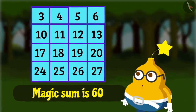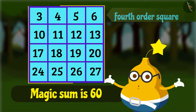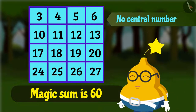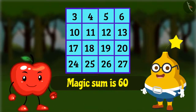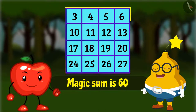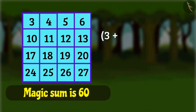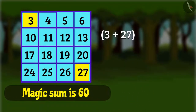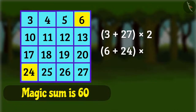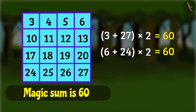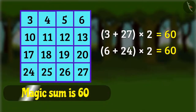Fruity asks: this square is of the fourth order, so there is no central number — how did you calculate the magic sum so quickly? Api says: in a fourth order square one can find the magic sum by finding the sum of numbers in opposite corners and multiplying it by two. In both cases we get 60, which is the magic sum.